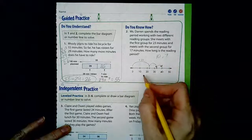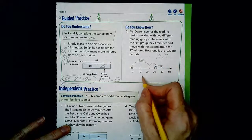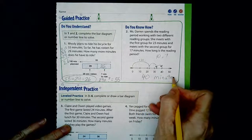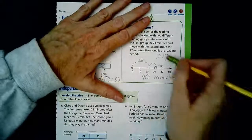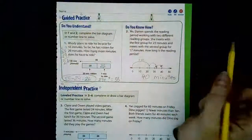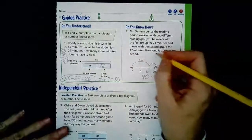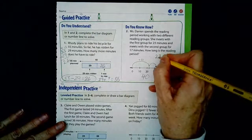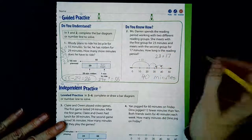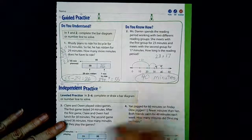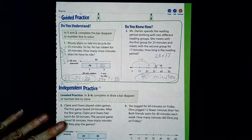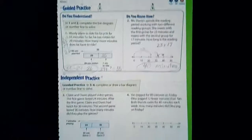So the answer is 40 minutes. If you didn't have a number line, the best way is to add 23 plus 17 — stack and solve to get 40 pretty quickly without the cumbersome number line.